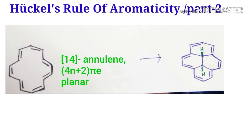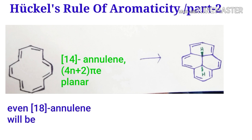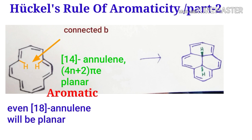Now I go to a higher system: 14-annulene. There are 4n plus 2 pi electrons here. The ring size is very large, so it is a planar structure. Not only 14-annulene, but even 18-annulene can also be a planar structure. So this compound is aromatic. Now if we connect these two hydrogens by a carbon atom...